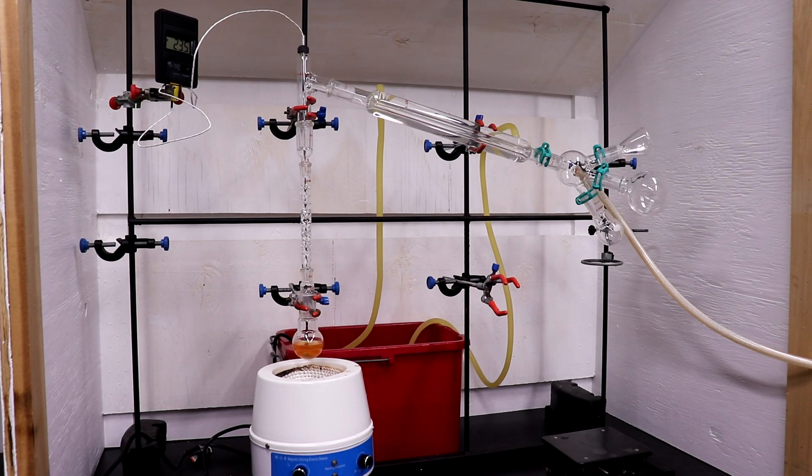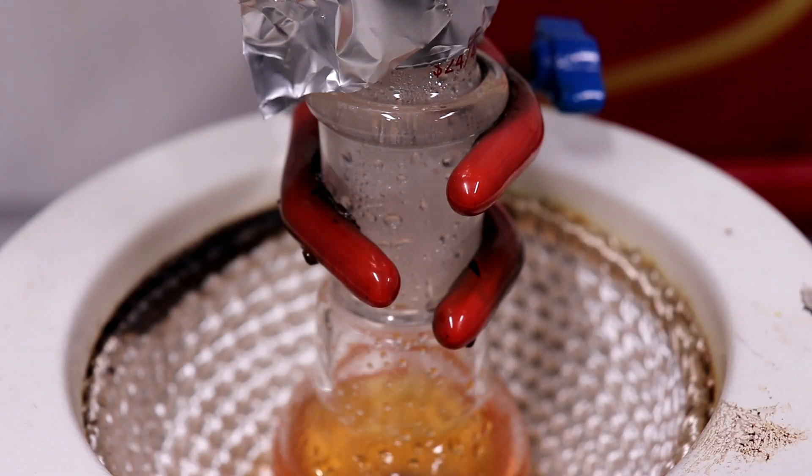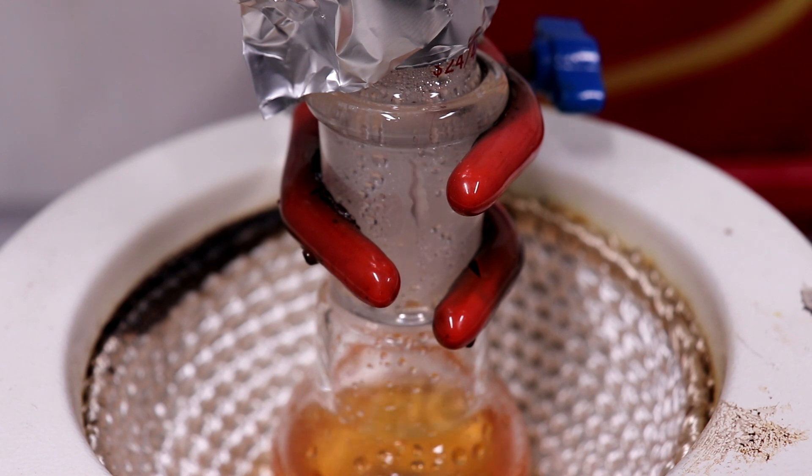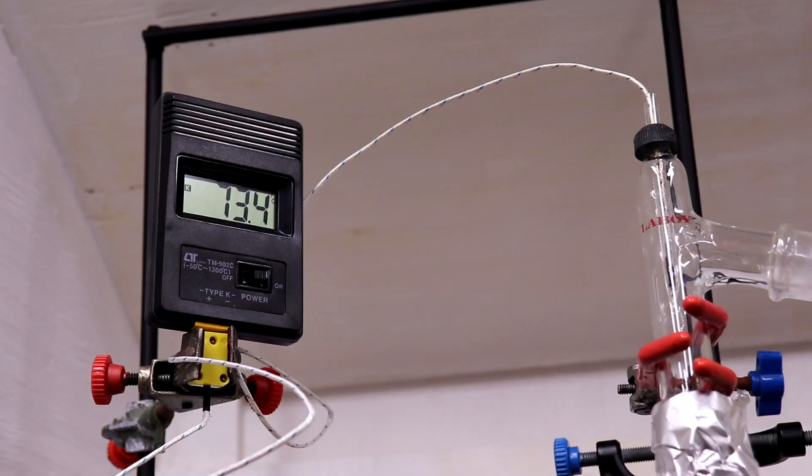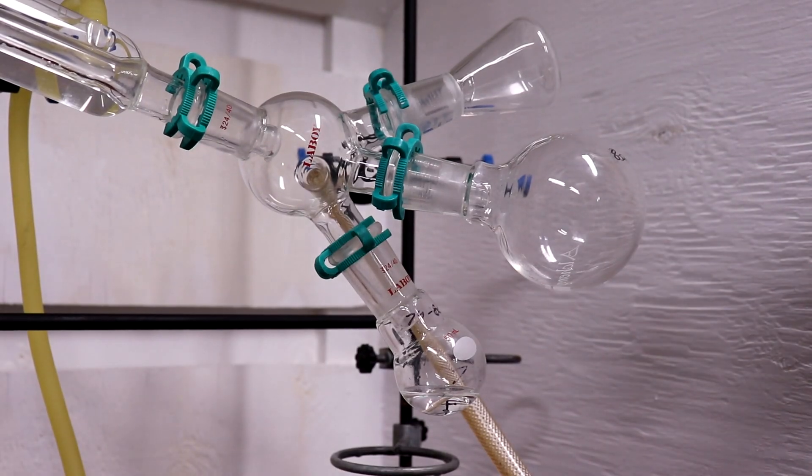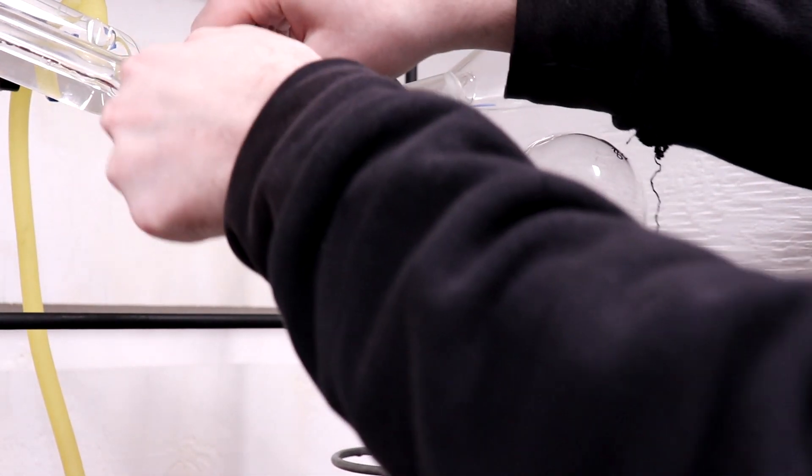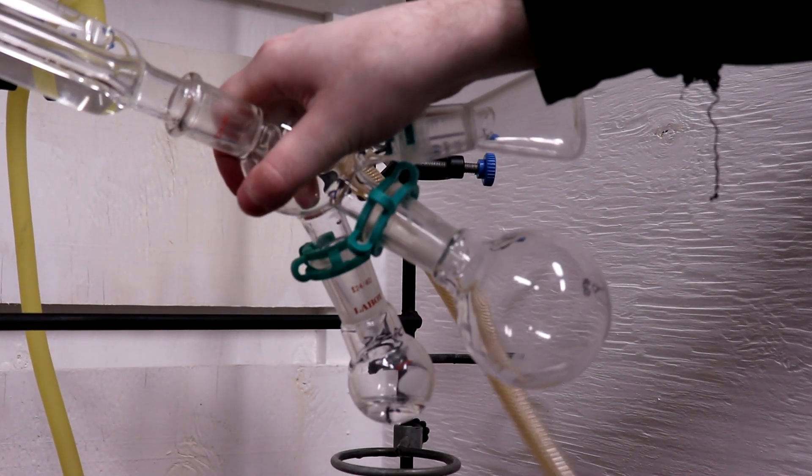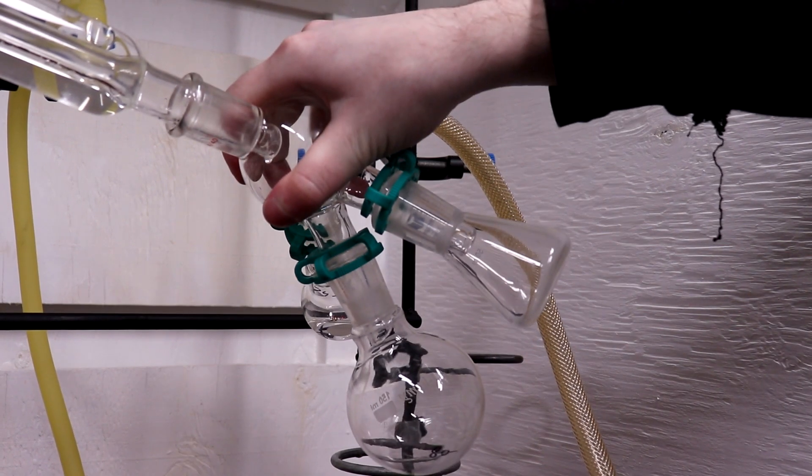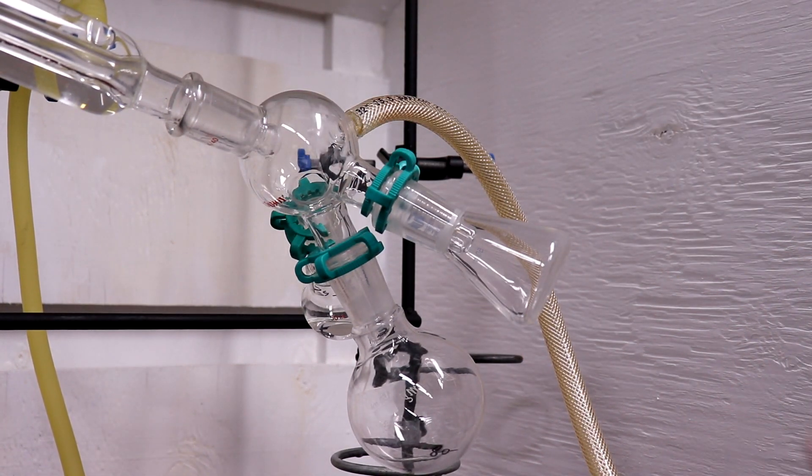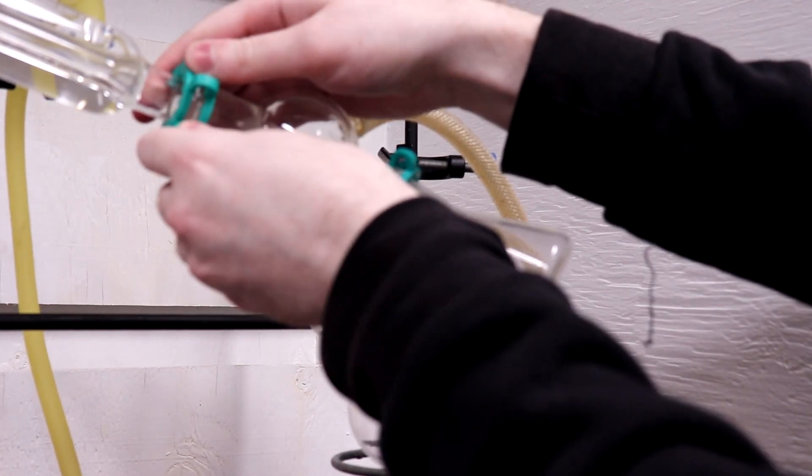I then set up for a fractional vacuum distillation to distill over our product. Despite having a fractional column, no clean fractions were observed. The temperature just very slowly increased as the distillate came over, and it went from a range of 74 to 84 degrees Celsius.